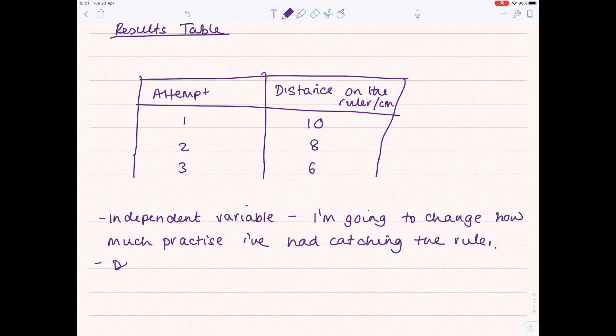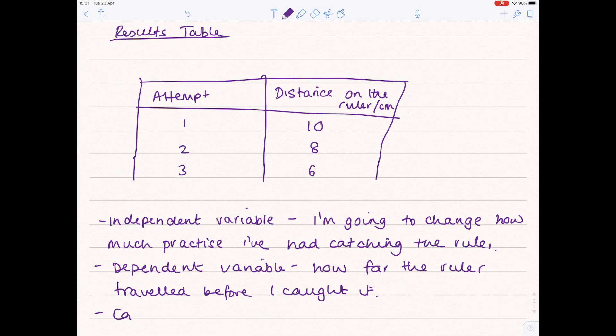I'm going to measure now with the dependent variable how far the ruler traveled before I caught it. Control variables are slightly more straightforward. So what are you keeping the same? Well it must be the same person each time doing it because some people will be naturally faster than others.